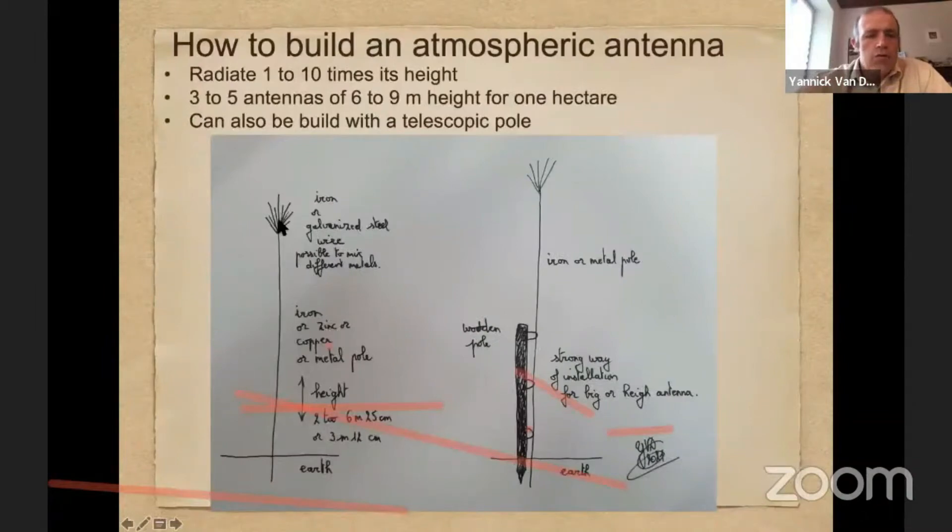For example, how to do the most simple version would be to put just an iron pole, like an iron pole from construction, for example, in the soil. An iron pole of three, four or even more meters.